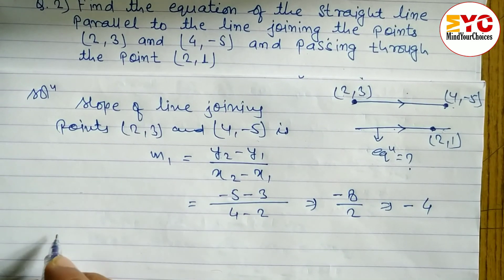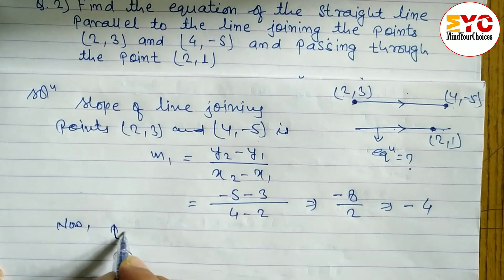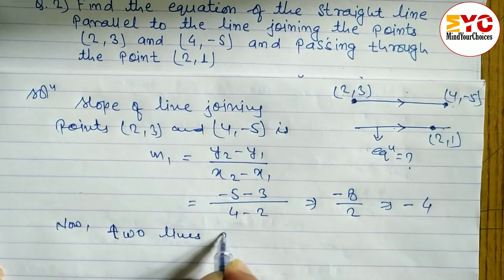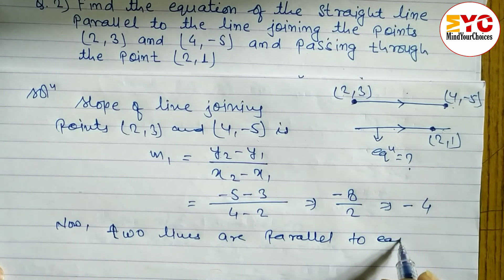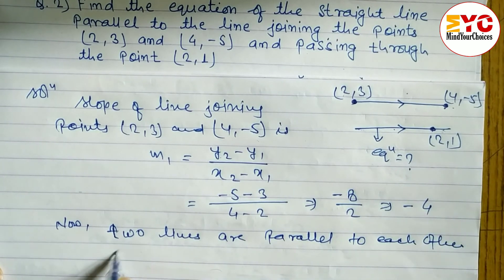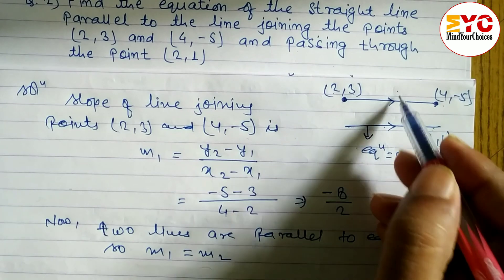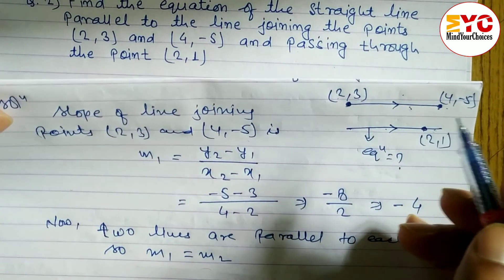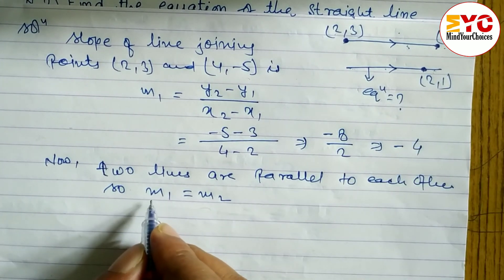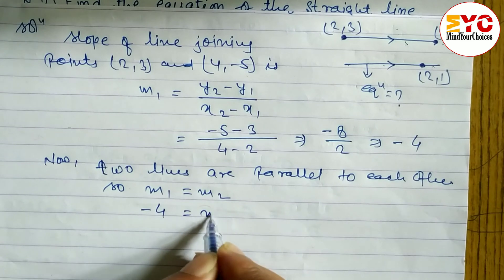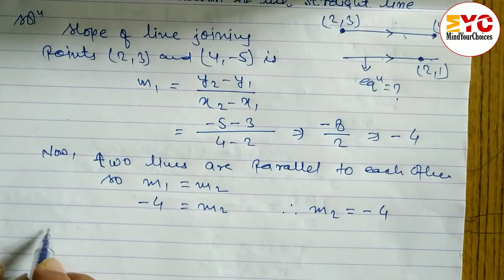Since the two lines are parallel to each other, the condition is m1 equals m2 — the slopes of both lines are equal. So m2 equals minus 4. Therefore the slope of the required line is minus 4.